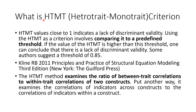Some authors suggest a threshold value of 0.85, as referenced in the provided citation. The HTMT method examines the ratio of between-trait correlations to within-trait correlations of two constructs. Put another way, it examines the correlation of indicators across constructs compared to the correlation of indicators within a construct.